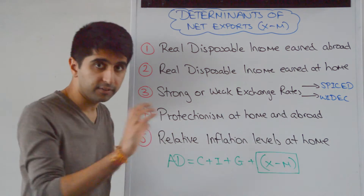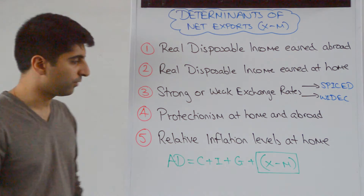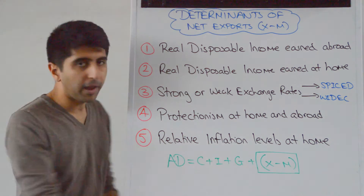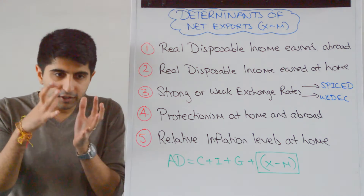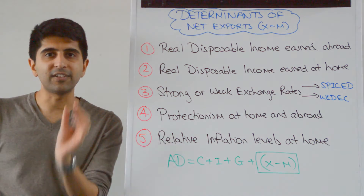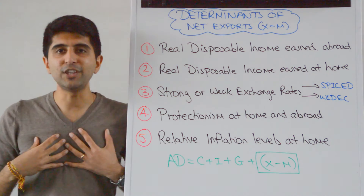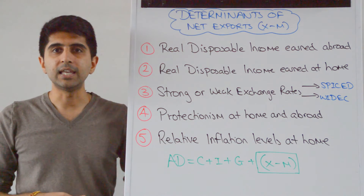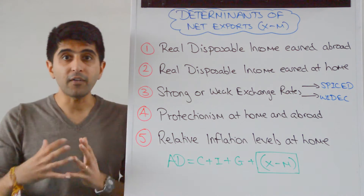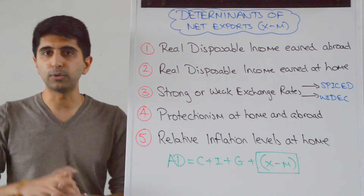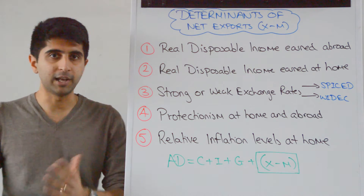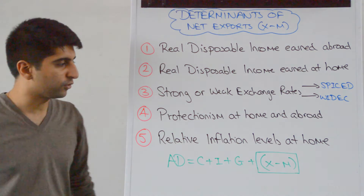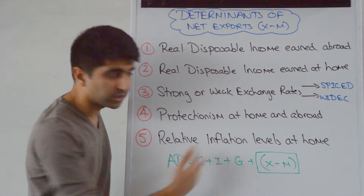So protectionism at home and abroad is a key determinant of import expenditure and export revenue. And also relative inflation levels at home — the word relative is very important. Comparing inflation levels to other countries, not just looking at inflation in isolation at home, but looking at inflation relative to inflation rates abroad. So if inflation in the UK is higher than in other countries, especially major trading partners, then our exports are going to be less competitive, demand for exports is going to be lower, and export revenue generated will be lower. High relative inflation reduces export competitiveness, reduces revenues from exports, reduces X in this bracket which can then shift AD to the left.